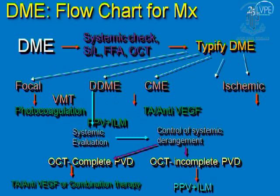When facing diabetic macular edema, you need to assess what systemic control the patient has. This is very basic — all patients should be well-controlled systemically before you even think about treating diabetic macular edema. You need to use clinical equipment including slit lamp examination, 90-diopter examination, and the help of angiography or OCT. You decide which cases need OCT or angiography, and then determine the type of diabetic macular edema. The first step in management is identifying what type of DME you are dealing with.